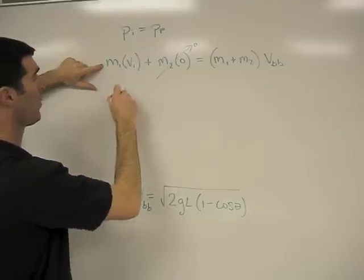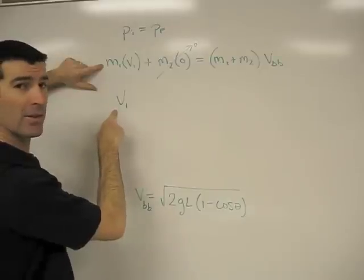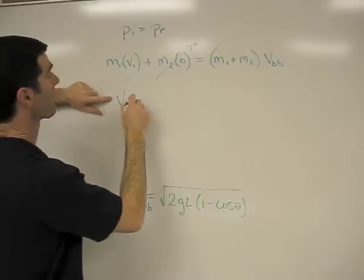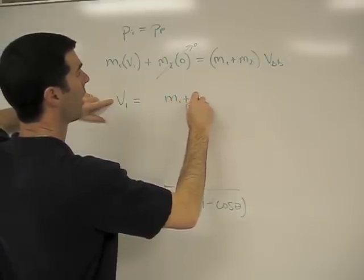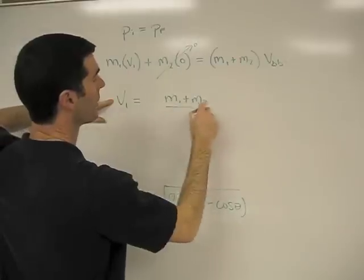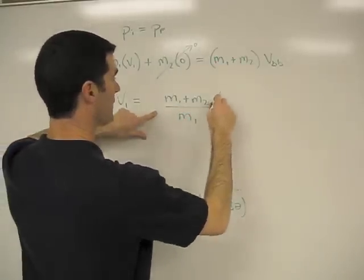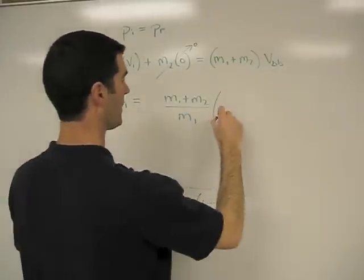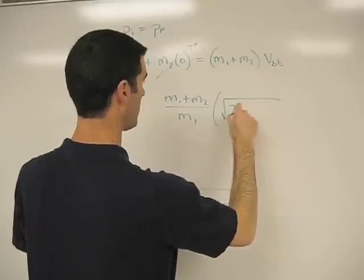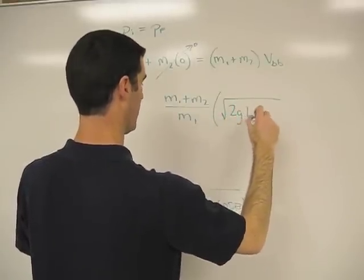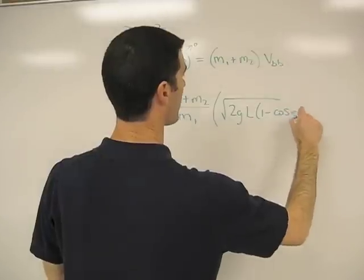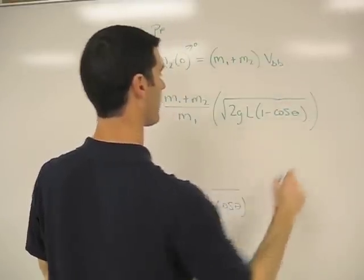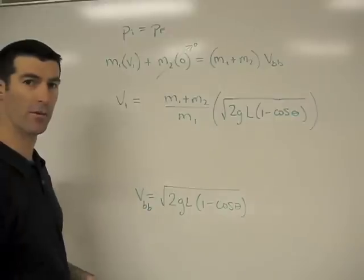So my v1, which is going to be the velocity of the bullet, is going to equal m1 plus m2 all over m1 times this right here, which is square root of 2gL times 1 minus cos theta. And that's going to give us our final velocity.